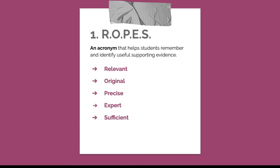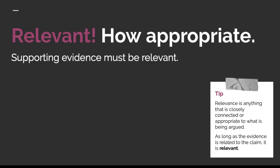If you can find evidence that meets all five of these criteria, then there's a very good chance that the evidence in your research project is going to be really good evidence. We're going to start today by focusing on relevant evidence. Relevant evidence is anything that is closely connected or appropriate to what is being argued in your thesis. As long as the evidence is related to the claim, it is relevant.